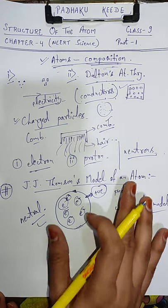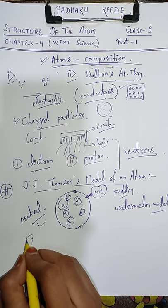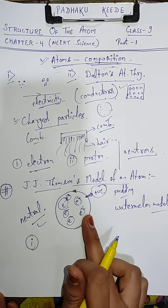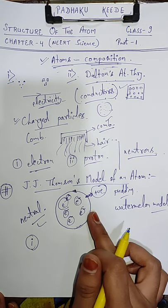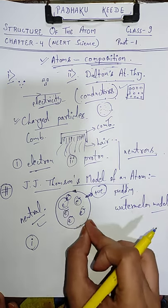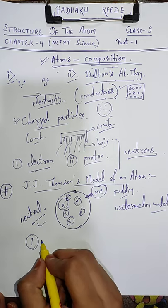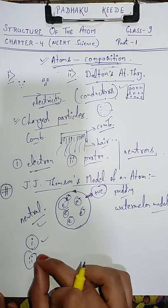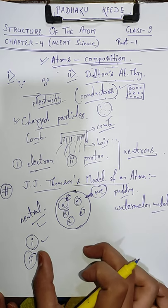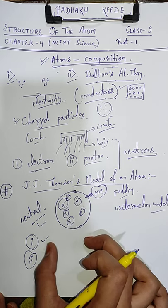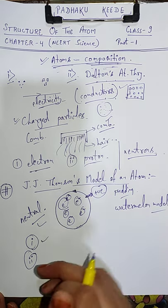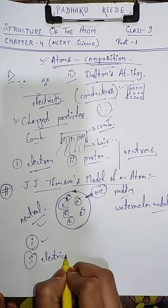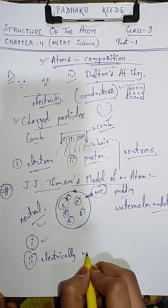So J.J. Thomson ne is model ke postulates diye. Number one was: an atom consists of a positively charged sphere and the electrons are embedded in it. And the next one was: the negative and the positive charges are equal in magnitude, so the atom as a whole is electrically neutral.